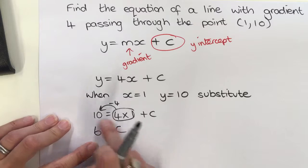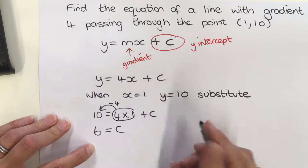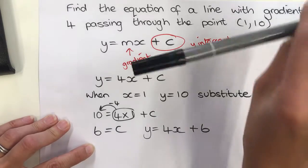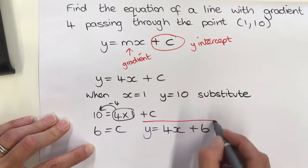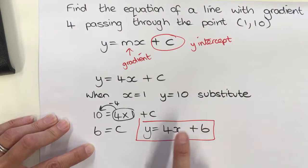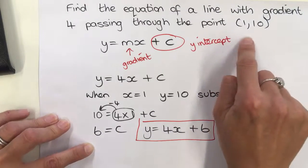All I need to do now is put that back into my equation: y = 4x + 6. And that is the equation of my straight line with gradient 4 passing through this point.